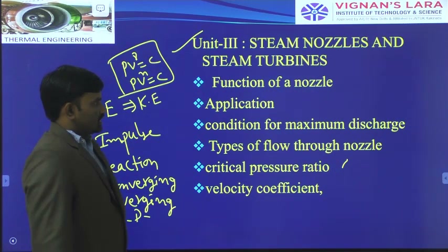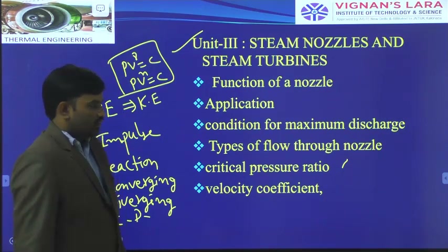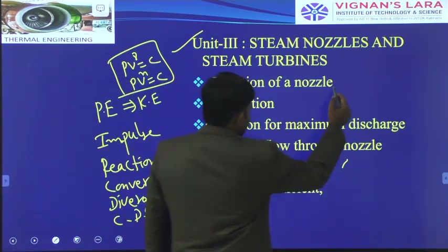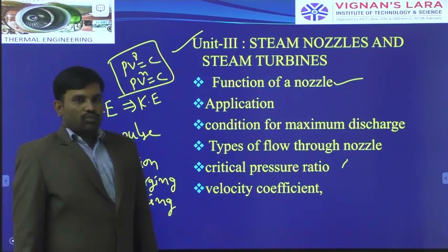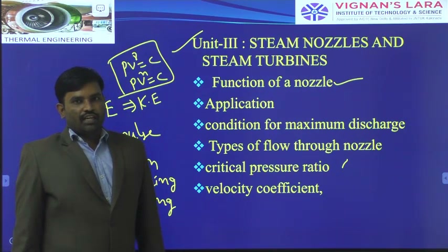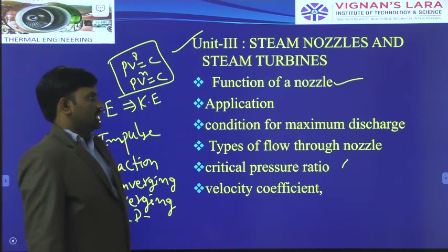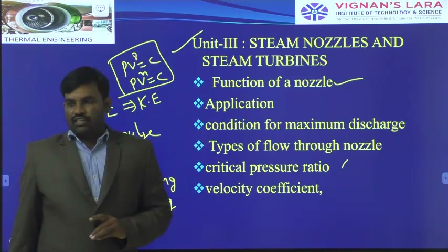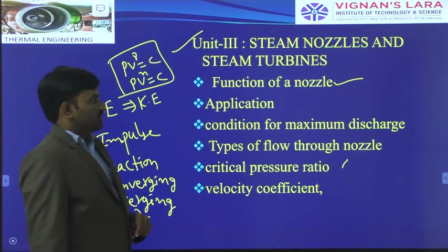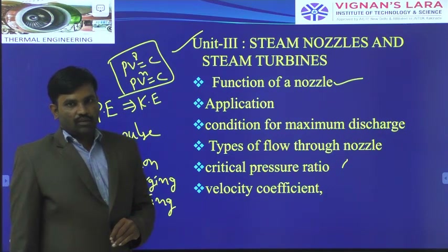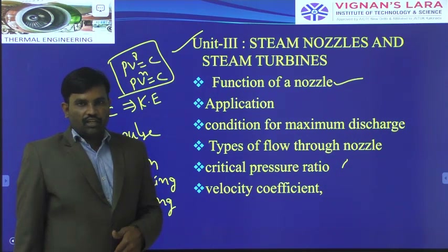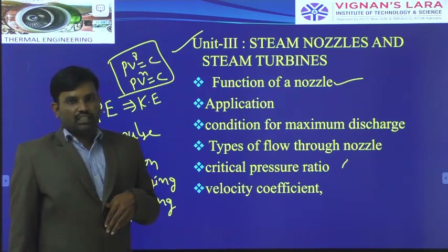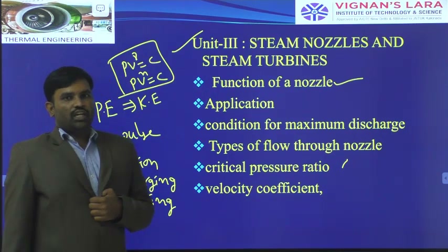In this unit we will discuss the function of a nozzle. Generally we use a nozzle to convert the pressure energy of a working fluid into kinetic energy. In the case of steam nozzles, we convert the pressure energy of steam into high velocity steam. We get high velocity steam from the steam nozzle. At the inlet we introduce high pressure steam that is generated in the boiler.